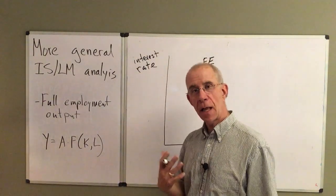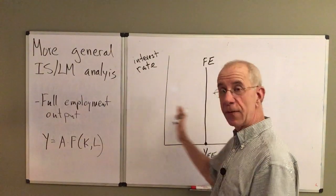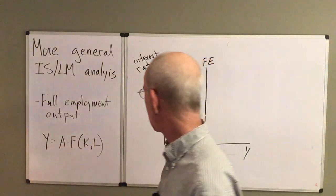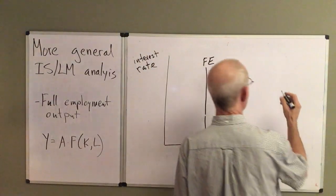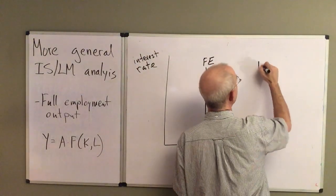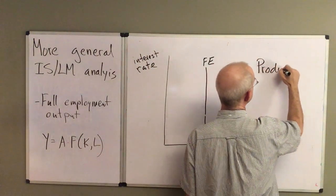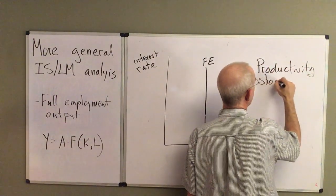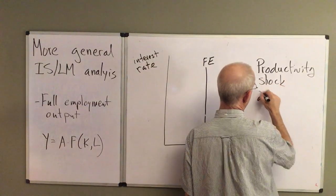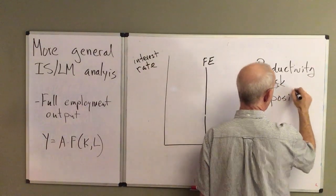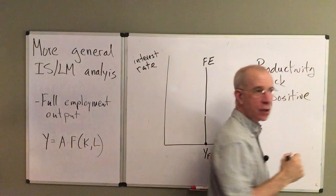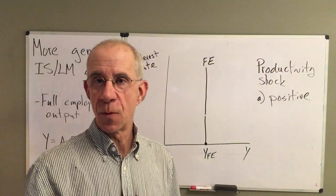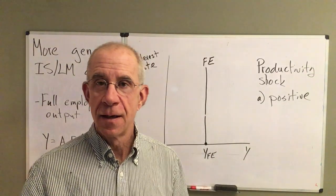So let's imagine that you had some sort of productivity shock. This is a, let's say it's some positive shock. Some technological change that makes the existing capital stock and labor stock more productive.